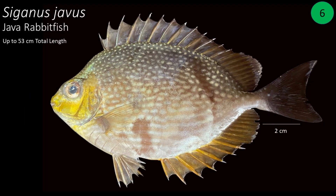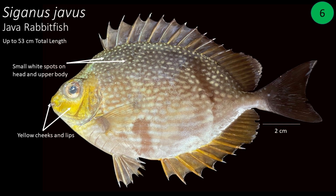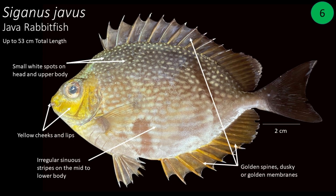Number 6: Siganus javus, also called java rabbitfish. This is the largest species of rabbitfish, as it can grow up to 53 centimeters in total length. The cheeks and lips are yellow, there are many small white spots on the head and upper body, and the body is gray fading to whitish towards the belly. There are irregular sinuous stripes on the mid to lower flanks, golden colored spines on the dorsal, anal, and ventral fins, while the membranes are dusky or golden, and the caudal fin is blackish.